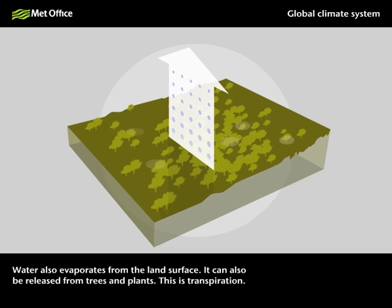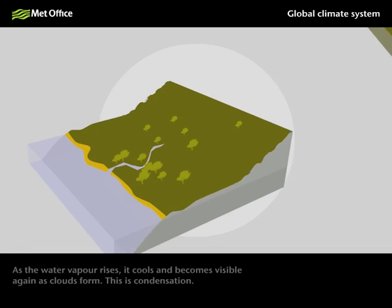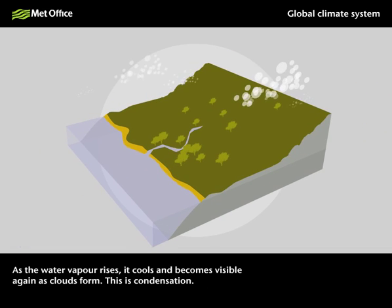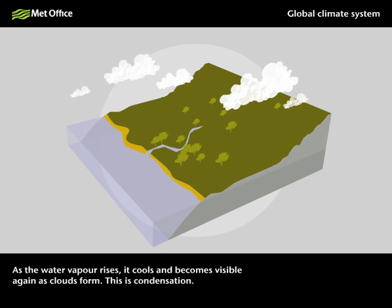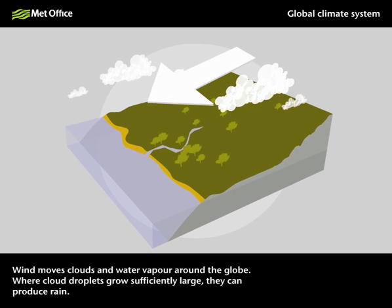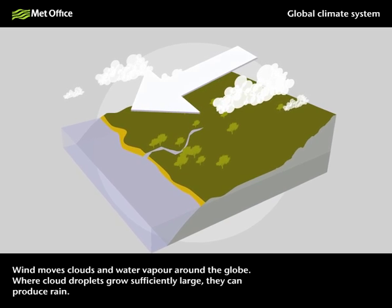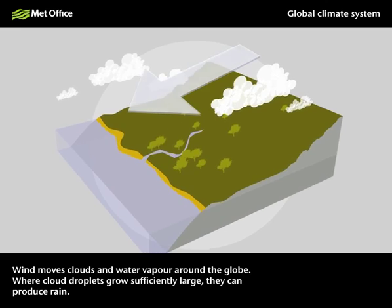This is transpiration. As the water vapour rises, it cools and becomes visible again as clouds form. This is condensation. Wind moves clouds and water vapour around the globe.